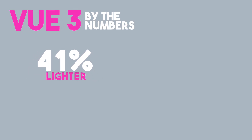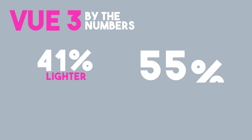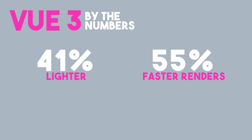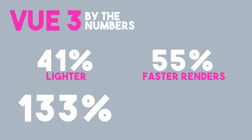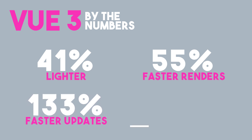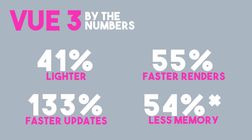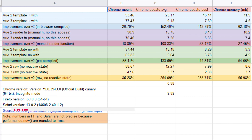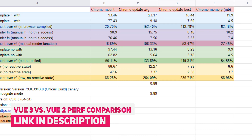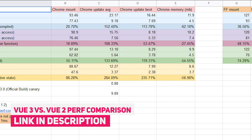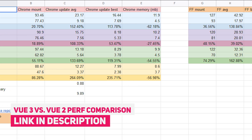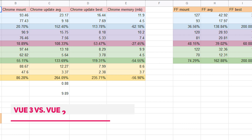Now my favourite part — the statistics. With tree shaking, Vue 3 boasts that it sizes up to 41% lighter than Vue 2. It's also up to 55% faster on initial render, has up to 133% faster page updates, and consumes up to 55% less memory than the same project using Vue 2. I've added a link in the description where the Vue team has created a quick spreadsheet of benchmarks with how Vue 3 performs against Vue 2 on different browsers. If you love stats, definitely go give it a look.